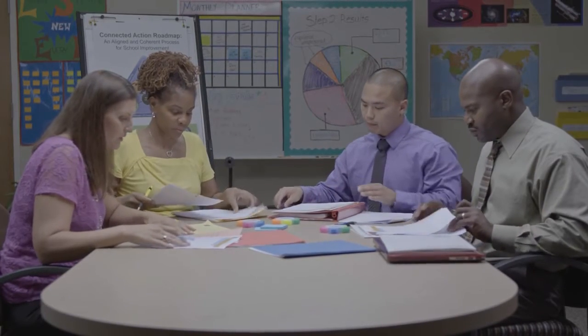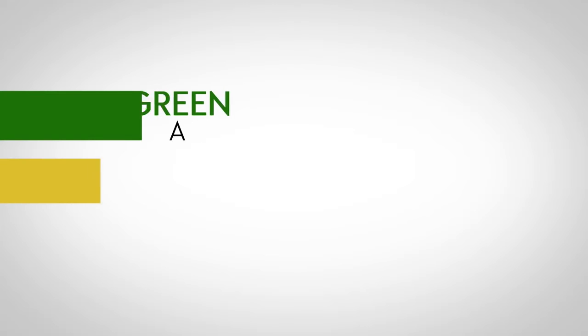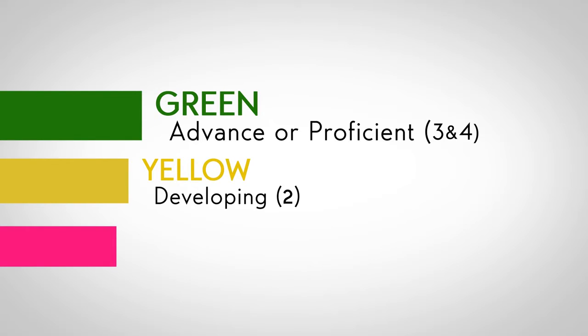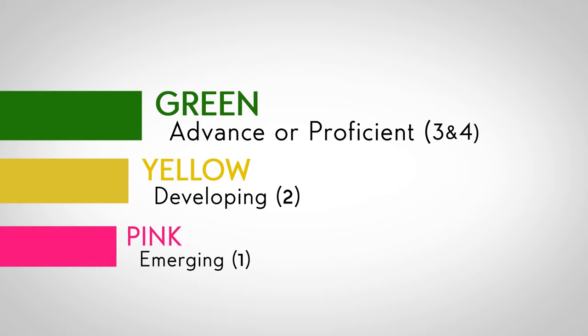Since we're going to be highlighting with three colors, we should break up the different categories. Green would be for fours and threes, yellow will be for twos, and pink will be for ones.